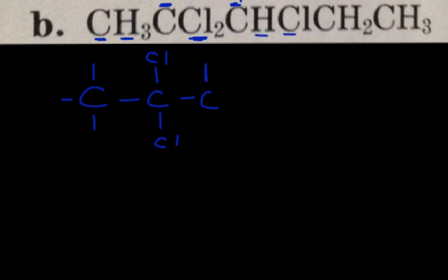Moving on to the next carbon — you write it down and see what's in front of it: an H and a Cl. So you put H here and Cl on the bottom; H and Cl are hanging off the carbons, not in the parent. You go to the next carbon — two hydrogens, so one at the top and one at the bottom. And last but not least, CH3 at the end — this carbon has three hydrogens on it — and you're done. It's a trichloro compound.